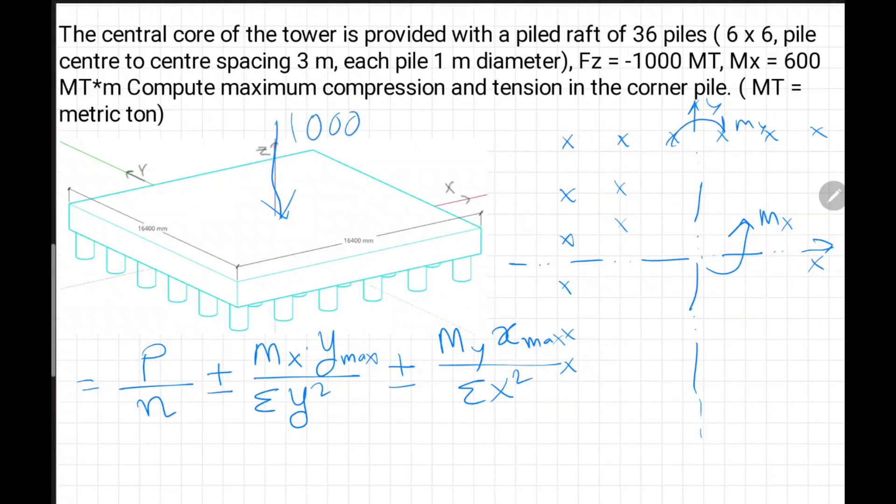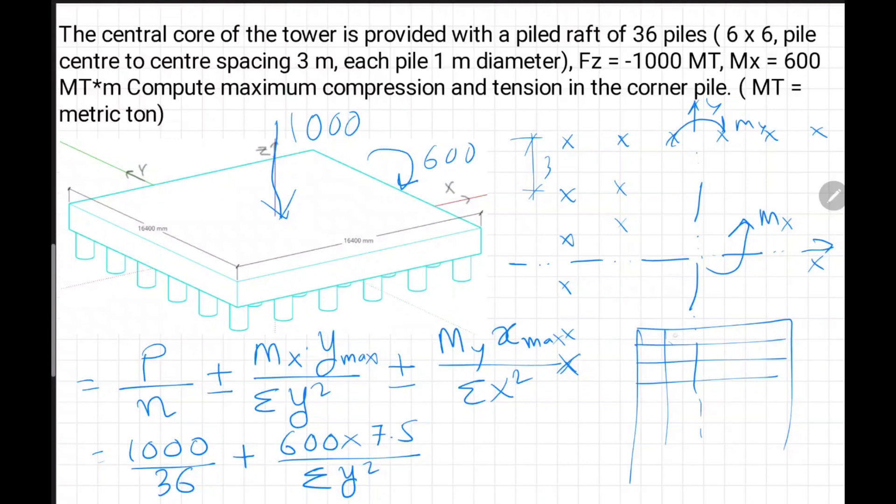Putting f_z direction - they have given force is compressive, 1000 metric ton. We will be having 1000 over 36. If we want to find out maximum compression, M_x is 600. My corner pile will be under maximum compression. For compression I will take plus 600 into the maximum distance, which is 3 meters, so the maximum distance will be 7.5. Then summation of all y squared. We can create an Excel table for pile mark and its coordinate x_i, y_i, find out x_i squared, y_i squared, and final summation, and we can solve this problem.